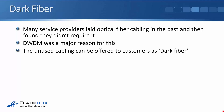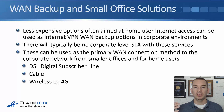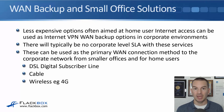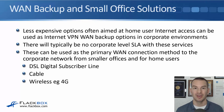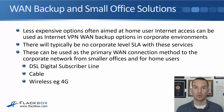There is a lot of unused cabling out there, and that is referred to as dark fiber — it's dark because it hasn't been lit up. Depending on where you are in the world, it may be possible to buy dark fiber from a service provider to use for your own WAN links. We'll also look at WAN backup and small office solutions — less expensive options which are often aimed at home user internet access but can also be used as internet VPN WAN backup options in corporate environments. There will typically be no corporate-level SLA with those services. These can also be used as the primary WAN connection method for smaller offices and home users.